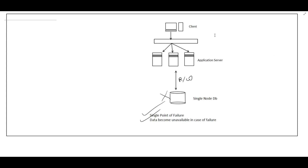Here we have a client, a load balancer, and app servers. We have a single DB node which serves read and write requests. If this DB node goes down, there will be a single point of failure and data becomes unavailable, so this application will not work.